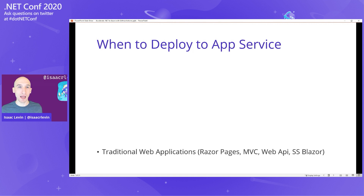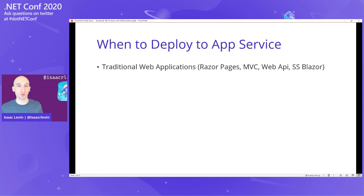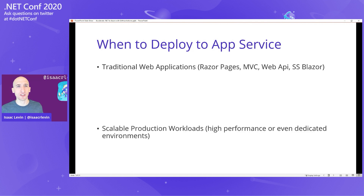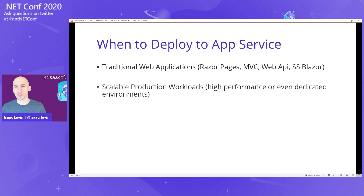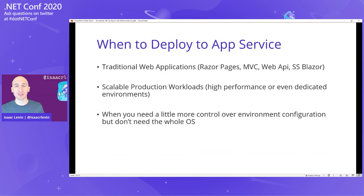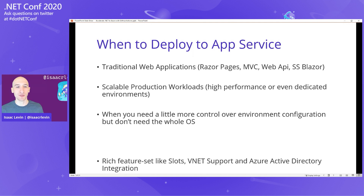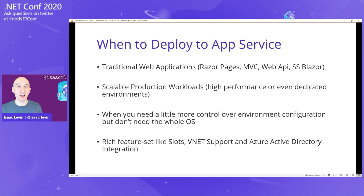When do you want to deploy to App Service? When you have a traditional web application with a front-end, an API, Razor Pages, MVC, Web APIs, or server-side Blazor. If you want scalable production workloads that can be high performance or dedicated in Azure, App Service is a really good option. When you want more control over the environment without managing the whole VM or operating system, App Service has rich feature sets like slots, VNet support, Azure Active Directory, and tons of integrations built in.